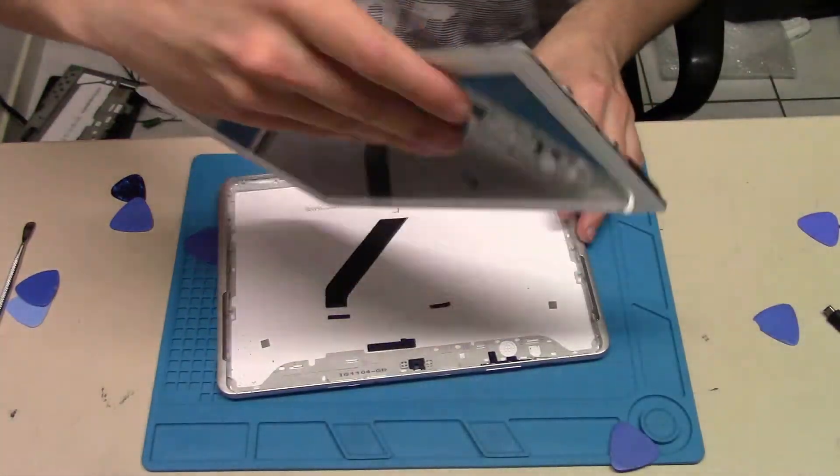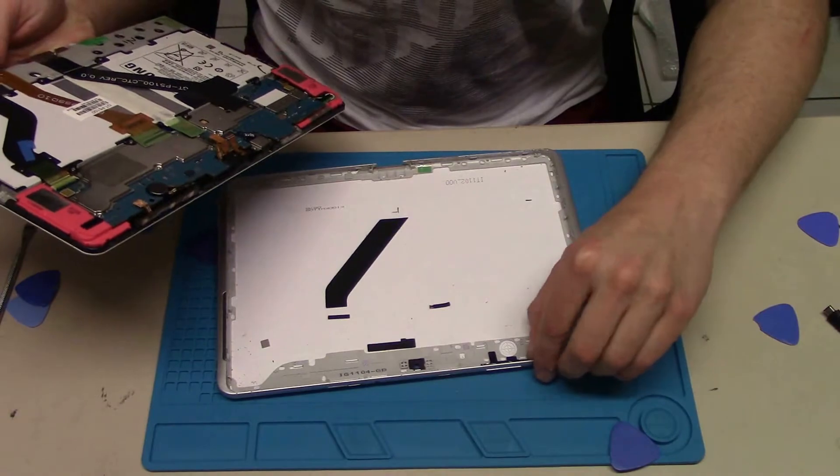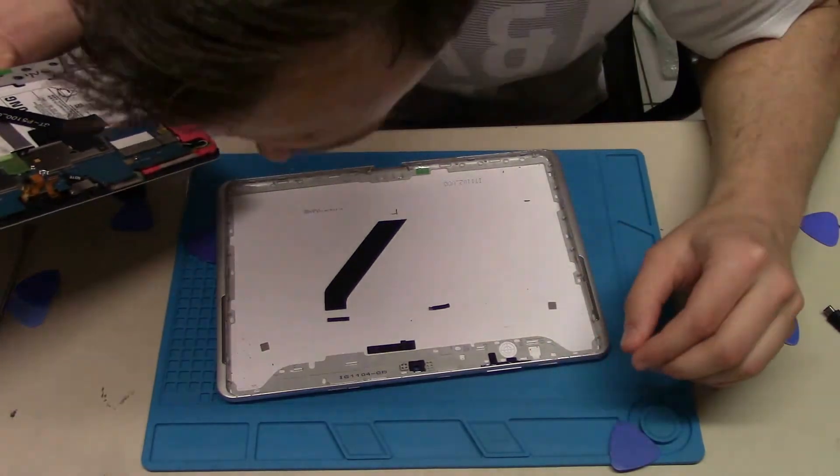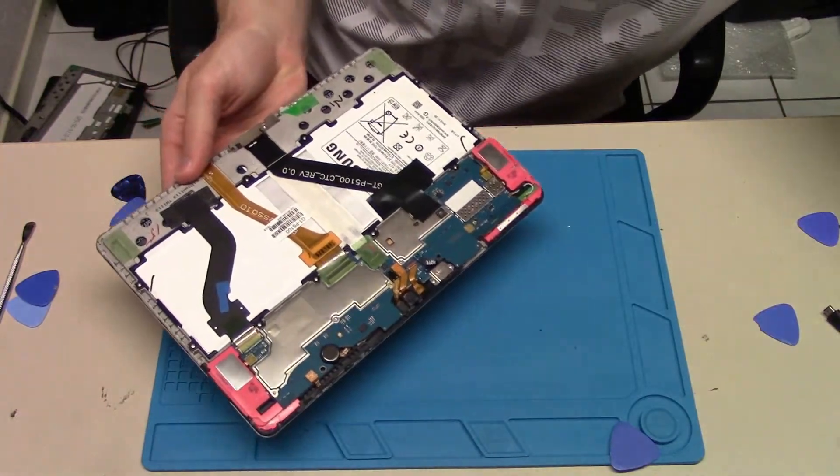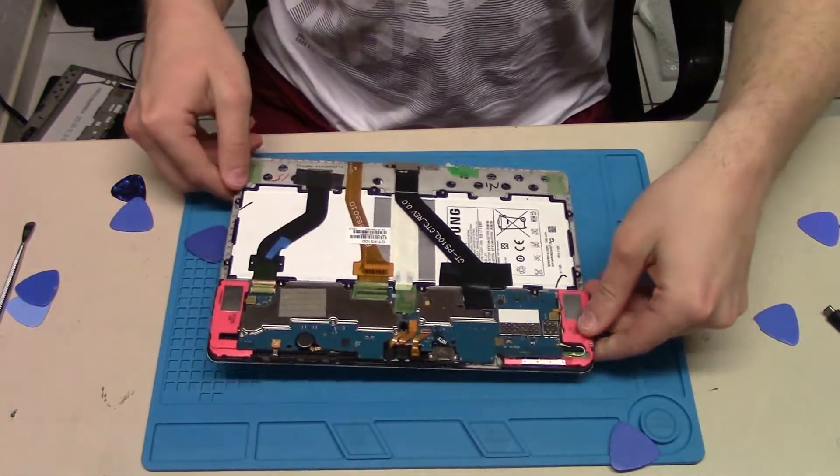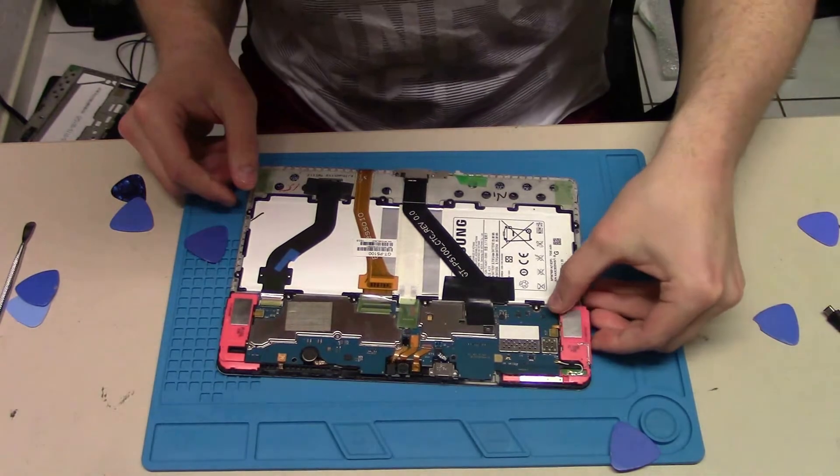If you have the original digitizer it will be easy. If you have changed the digitizer before it will be a little bit difficult because the glass is not like the original one, or the glue under it, and it breaks easier.